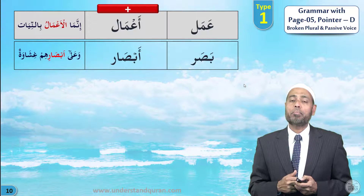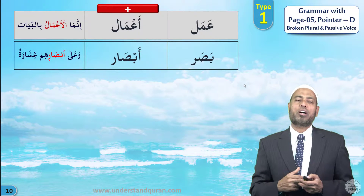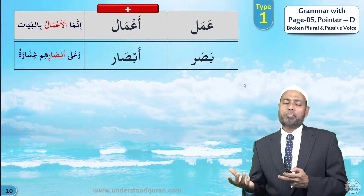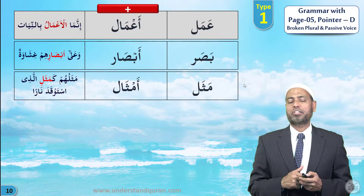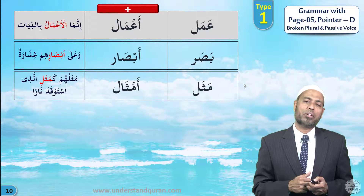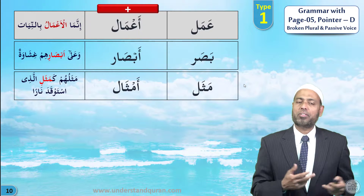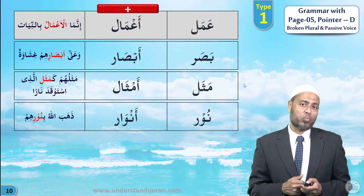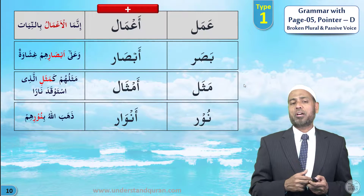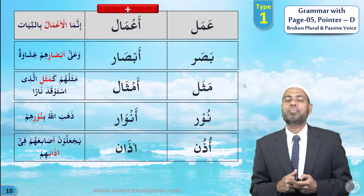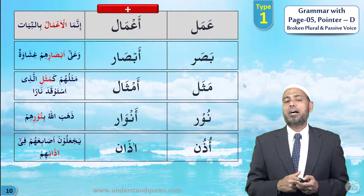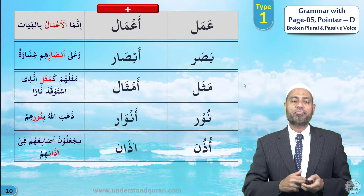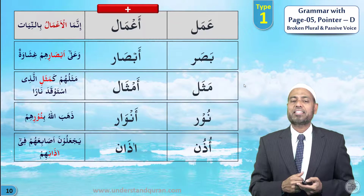Let us take some more words on the same pattern. Basar means sight; its plural is absar — as in: wa ala absarihim ghishawa. Mathal means example; plural is amthal — mathaluhum kamathali lladhi istawqada naran. Noor means light; plural is anwar — dhahaba Allahu binurihim, about the hypocrites: Allah took away their light. Udhun means ear; plural is adhan — yaj'aluna asa'bi'ahum fi adhanihim, they put their fingers in their ears.